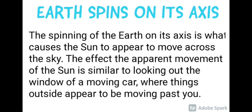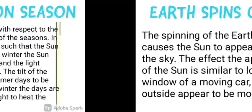Earth spins on its axis. The spinning of the Earth on its axis is what causes the Sun to appear to move across the sky. This apparent movement of the Sun is similar to looking out the window of a moving car, where things outside appear to be moving past you.